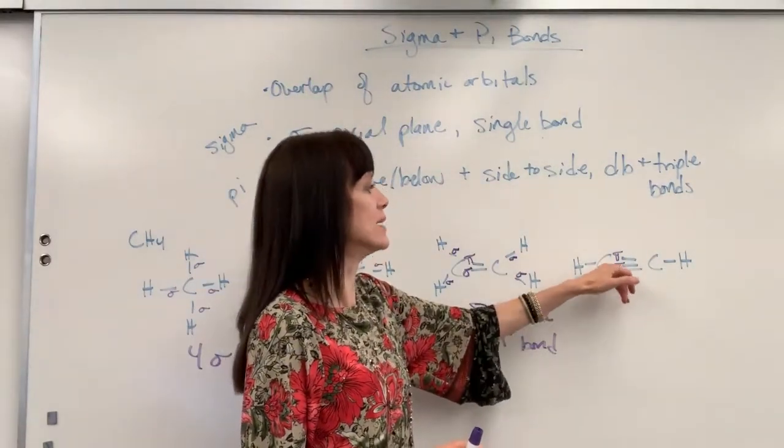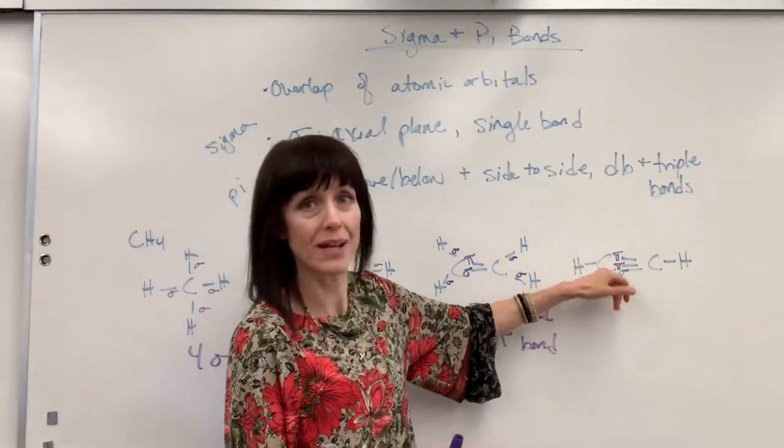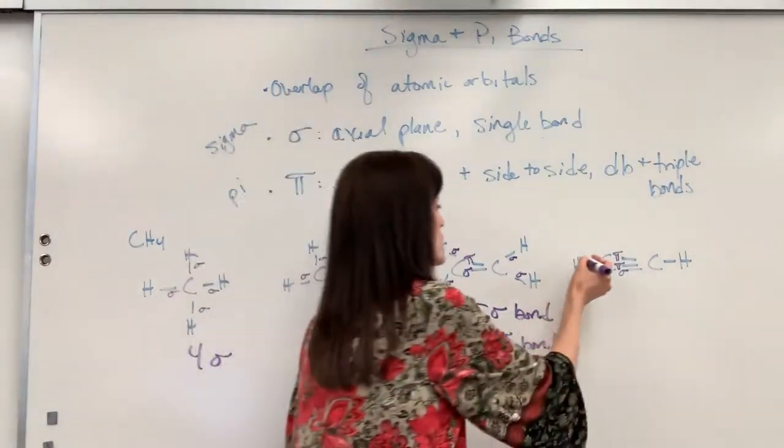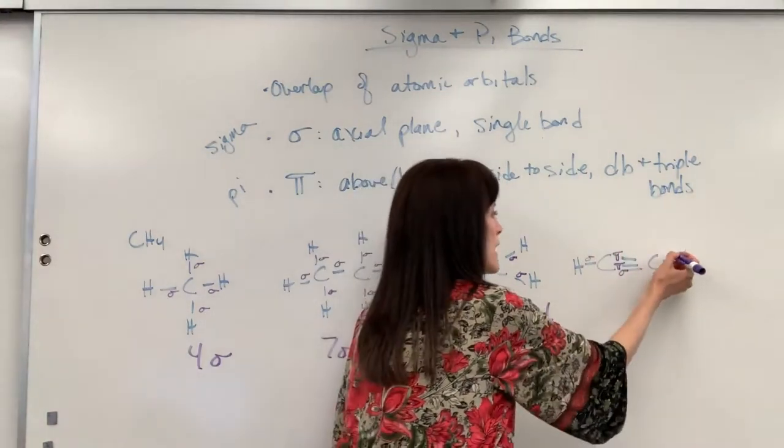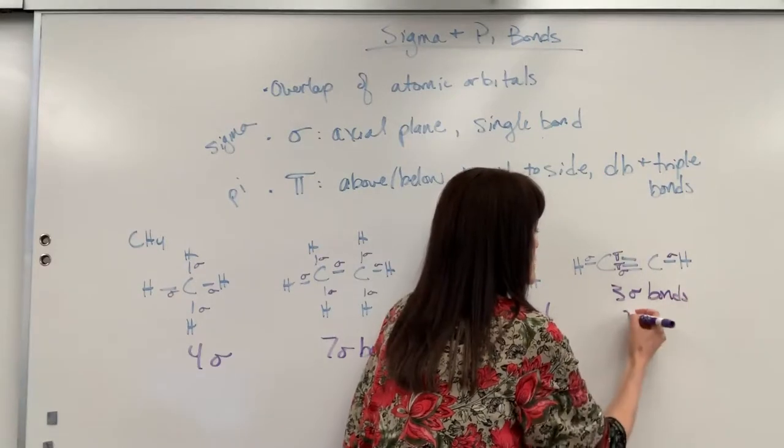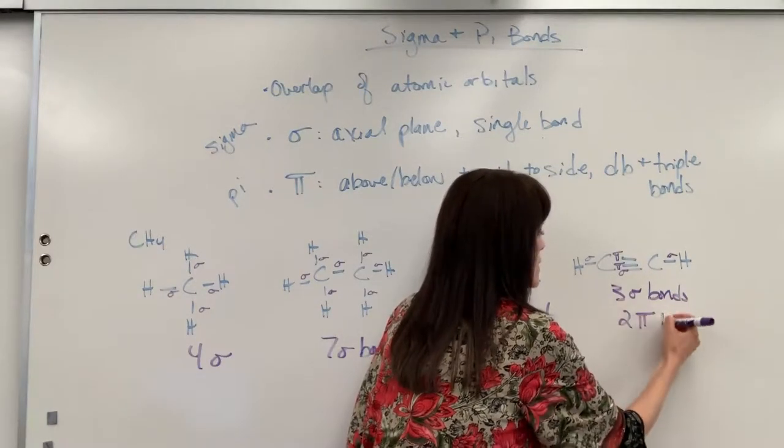So you have a sigma and two pi. Always when you have triple bonds. And then we are going to have our sigma and our sigma. So if we count this up, we have three sigma bonds and two pi bonds.